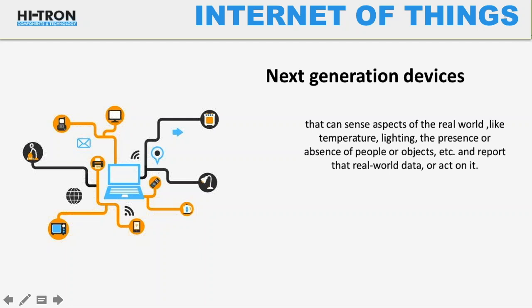Now I will walk you through the complete end-to-end IoT architecture. Before understanding it, I want you to understand the basic IoT terminologies, which are nothing but sensors, actuators, microcontrollers, gateways, networking platforms, protocols, APIs, databases, and frameworks — what all these terminologies are, where they reside, and how they are useful for creating any IoT application.